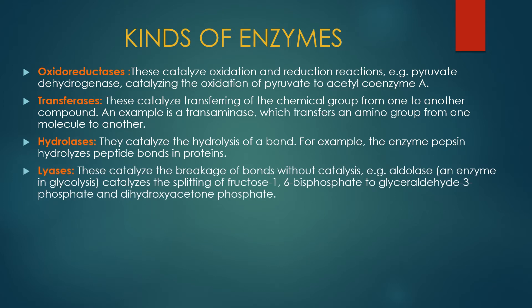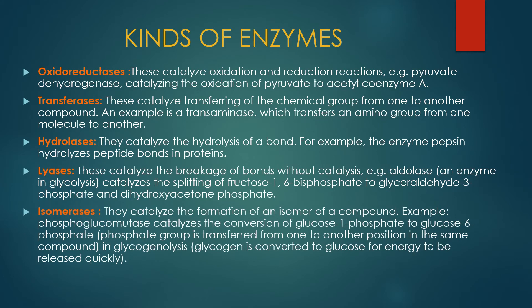Fifth enzyme isomerases — یہ chemical structure میں changes نہیں لاتے بلکہ structural formation میں changes لائیں گے اور isomers کو build up کریں گے. جیسے phosphoglucomutase enzyme glucose 1-phosphate کو convert کر کے glucose 6-phosphate میں change کر دے گا جس میں phosphate کی position carbon number 1 سے carbon number 6 کے اندر change ہو رہی ہے.